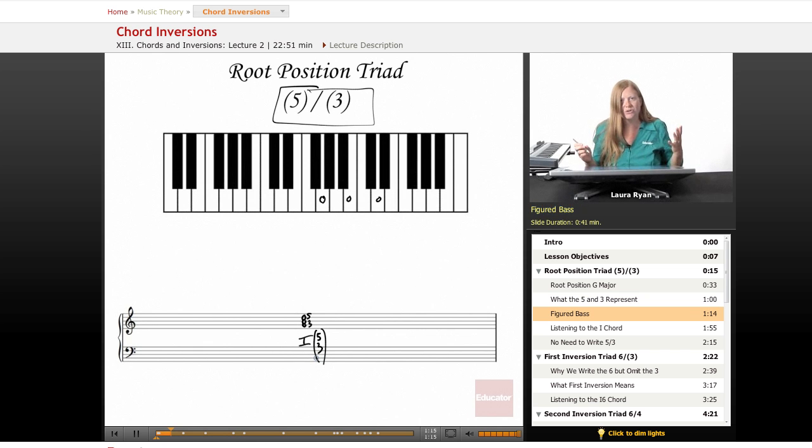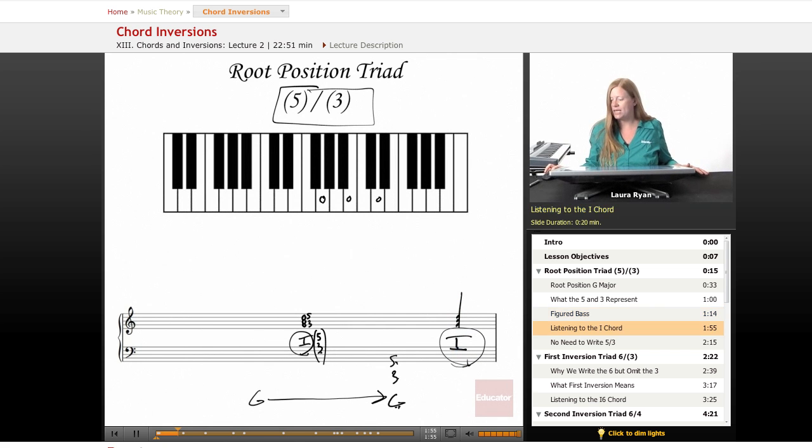When we are using these numerals, this is called figured bass. This is a system of notation that tells you from the bass note, from your G, if you're playing a chord and you know you're in the key of G and you're playing a G here, you know the other notes in this chord are a third above G and a fifth above G. So let's play the one chord in the key of G.